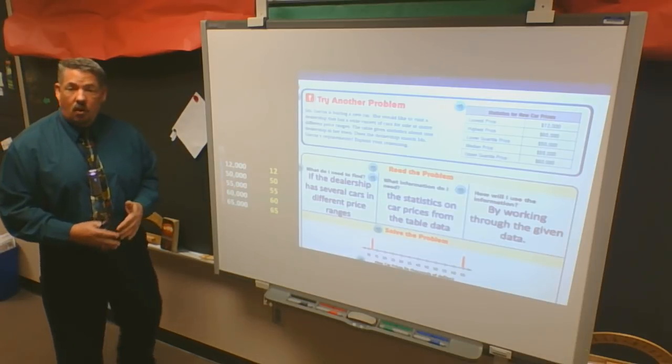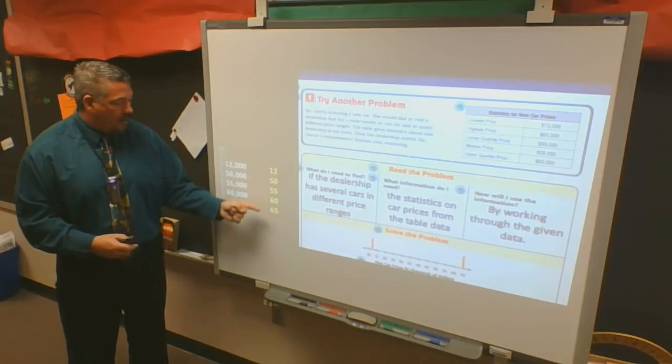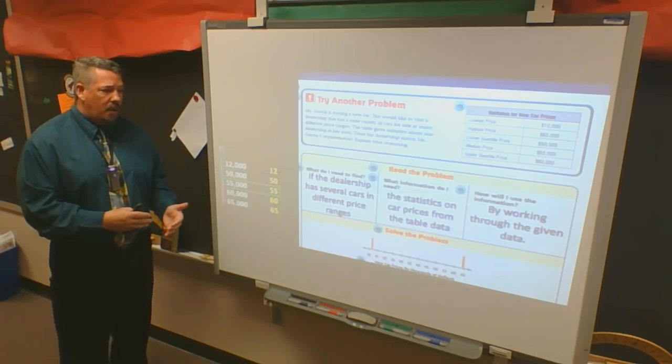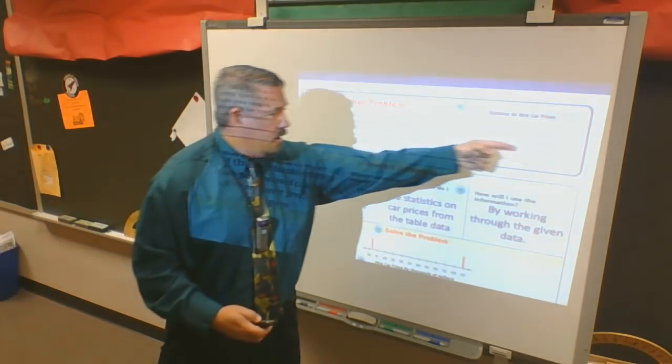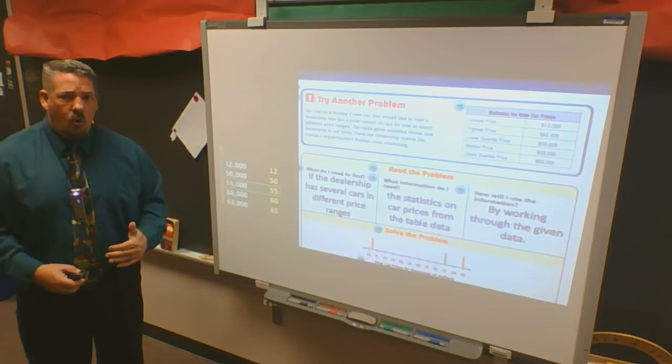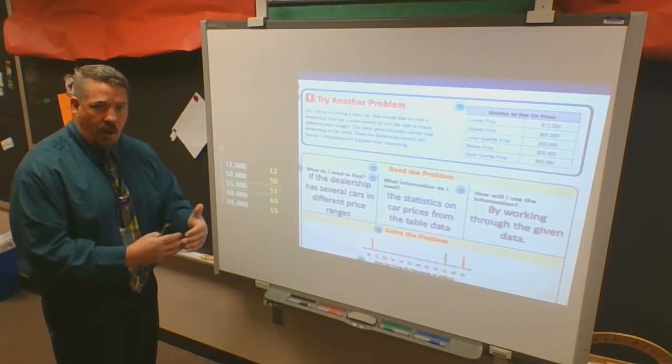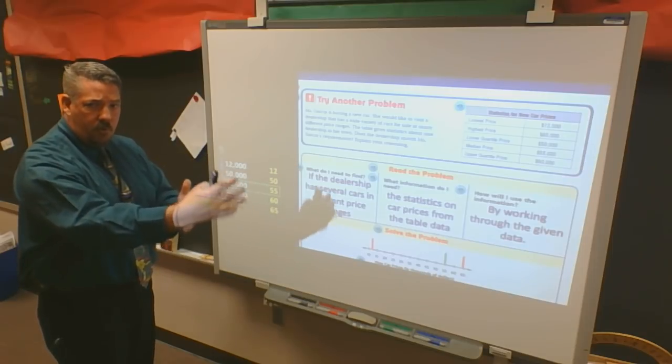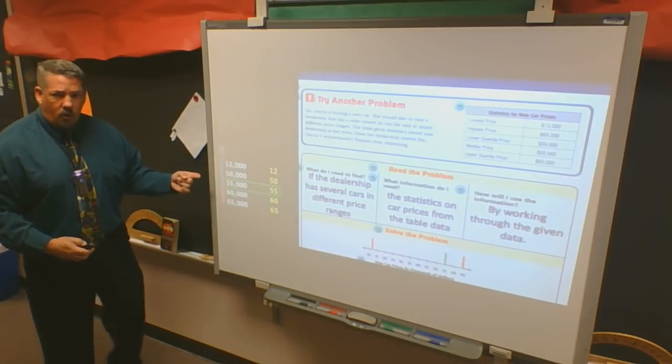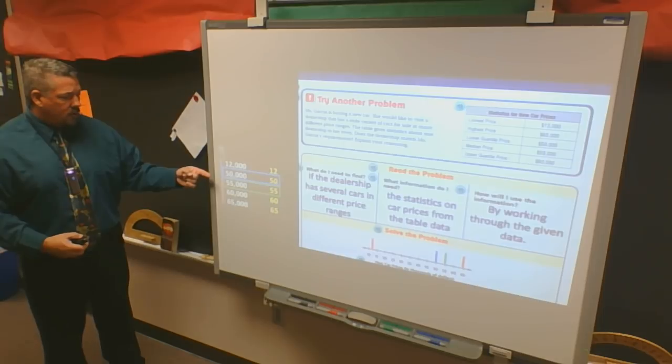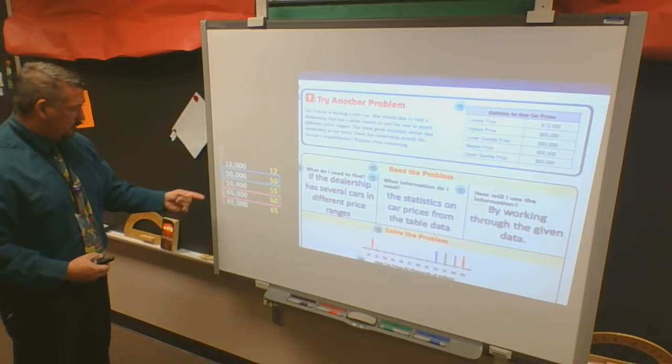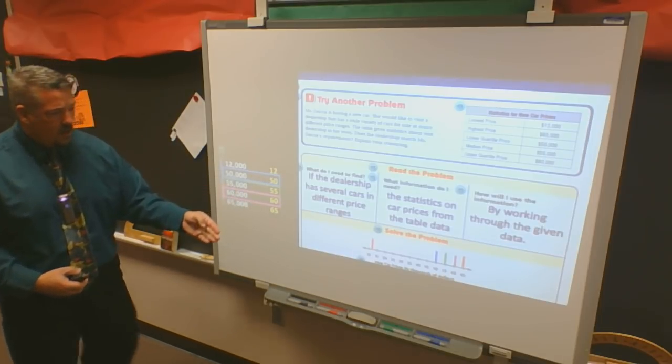So once I get on my box plot, start with my lowest number and my highest number. I'm going to plot my 12, and I'm going to plot my 65 and mark them on my box plot line. Then I have to find my median. They tell me my median, up here, is 55,000. That's where all those numbers came from. So I mark my 55. Notice already, if the median is halfway, that we're talking about 50% of these cars are 55,000 or more.